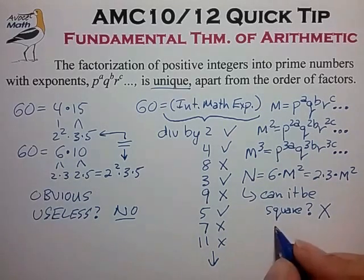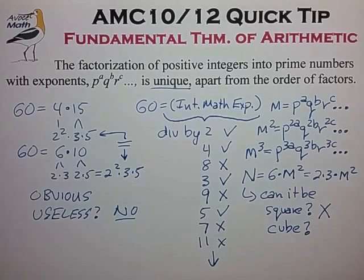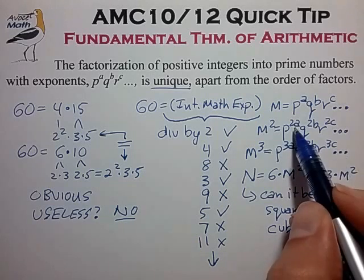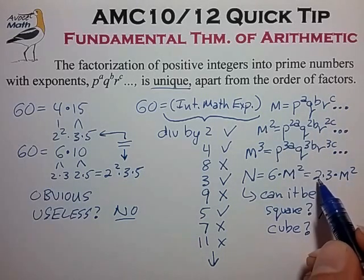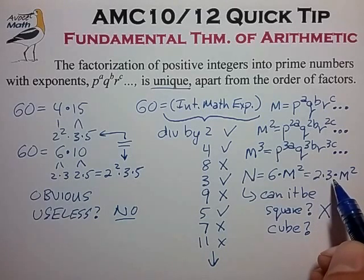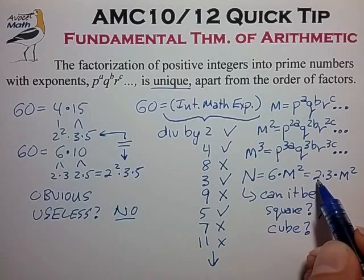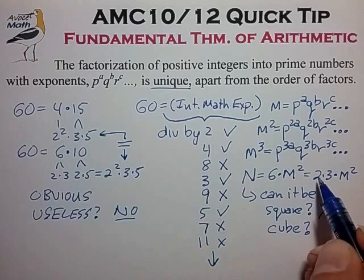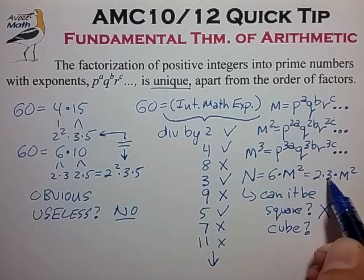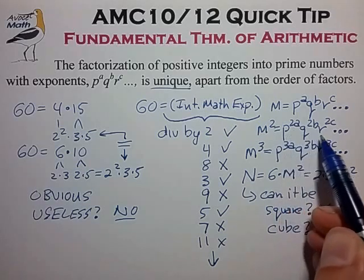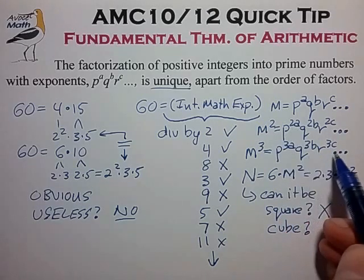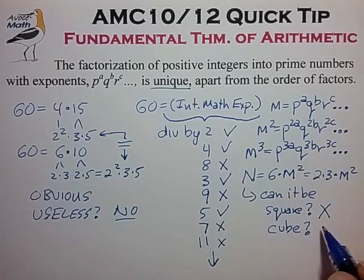Can it be a cube? Well let's take a look at that now. So we have m squared, which again we know has even exponents in all its prime factors, and we have some odd exponents hanging out in front of it. So in fact it can be a cube.